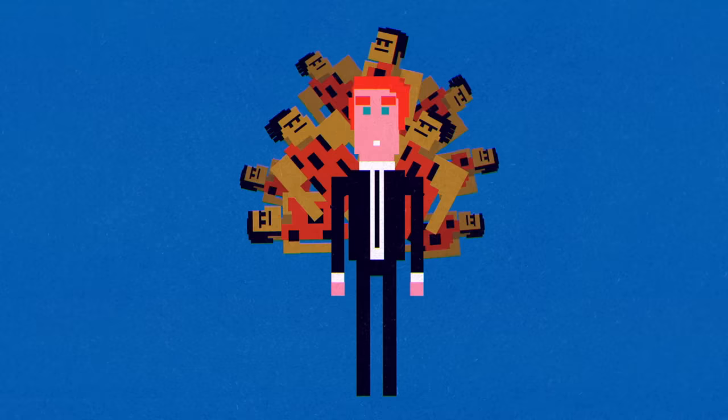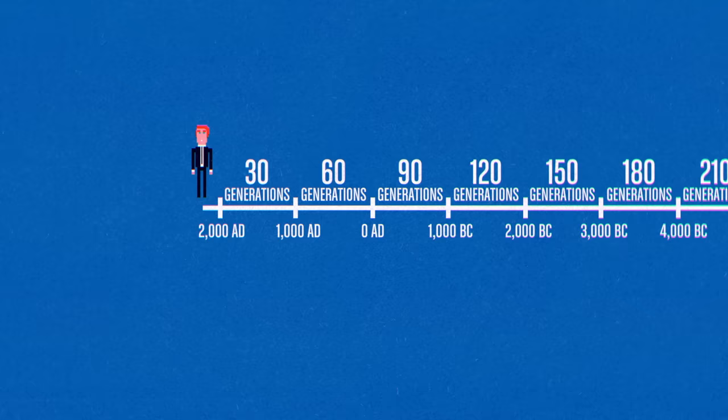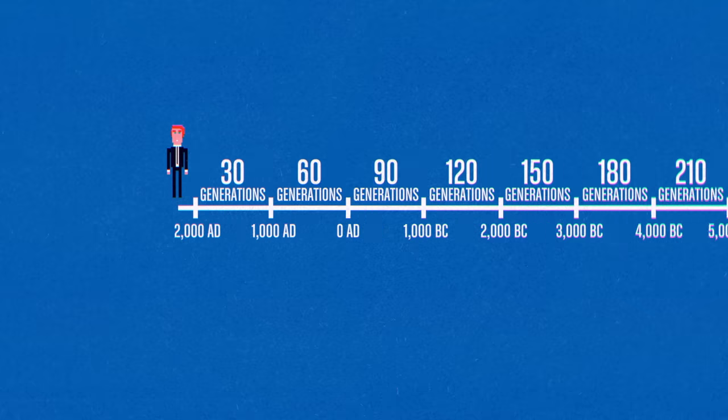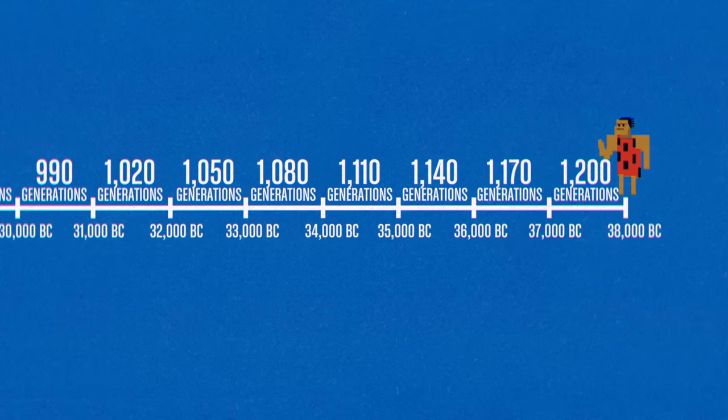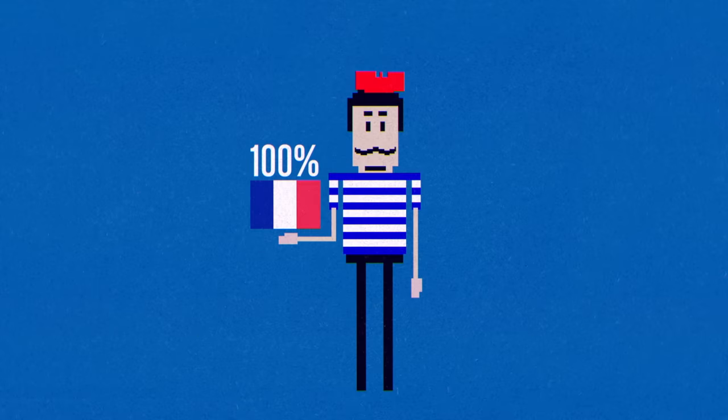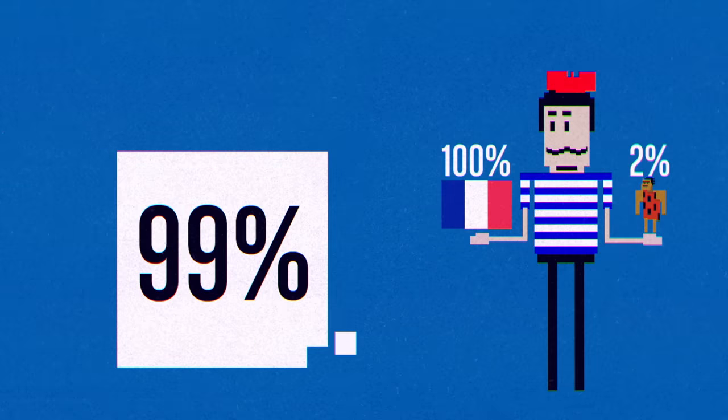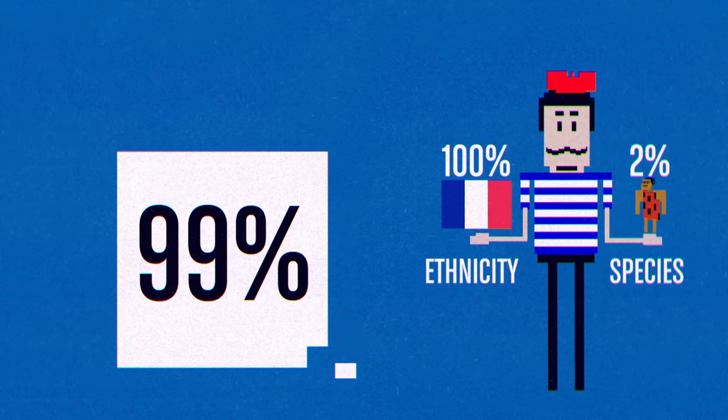Many Neanderthal ancestors, in fact. There are so many generations in 40,000 years, that a single Neanderthal's genetic contribution would be untraceable. You can be both 100% French and 2% Neanderthal. Though both come from the 1% of DNA that makes us different, they're accounting for different things.